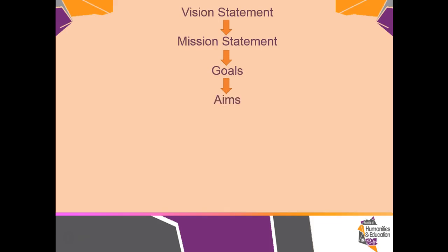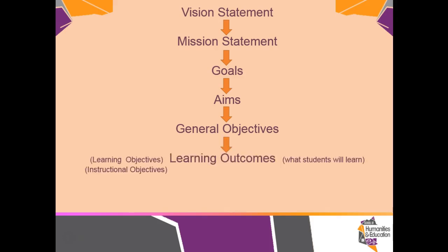From each aim, you have what we refer to as general objectives. These are objectives that are still very broad in nature. From our general objectives will come our learning outcomes, sometimes referred to as learning objectives or instructional objectives. In our lesson plan, our learning outcomes indicate what our students will learn after we have taught a class. From our learning outcomes come our activities — these are what the students will follow or do in order to enhance the learning process.